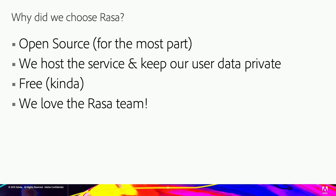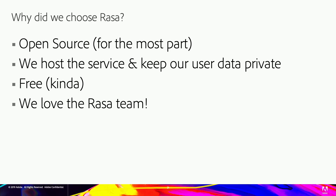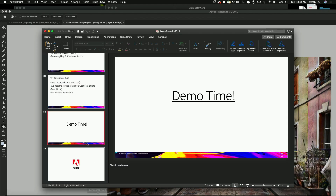Why did we choose Rasa? Open source for the most part — gives us the option to go in and modify the code if needed. We can host the service ourselves; I can build a model on my laptop and push it up to the server, which is awesome. It's free, though now that we're going into production we obviously need support contracts. We've been evaluating the enterprise offering and looking at additional options to make it more powerful. And of course we love the Rasa team — they stop by the office pretty frequently. Demo time!